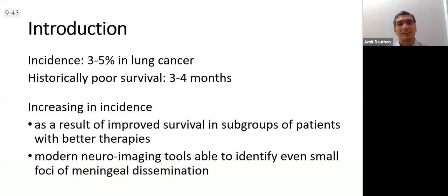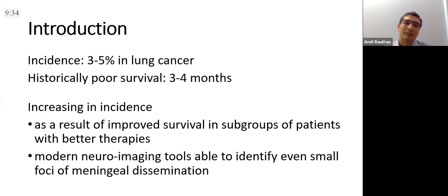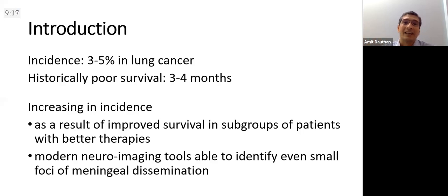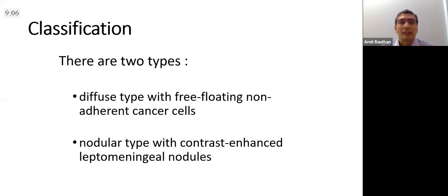This is the most dreaded complication of NSCLC in clinical practice. Luckily the incidence is very low — about 3 to 5 percent — but historically survival is very poor, only about 3 to 4 months. In recent years the incidence is going up because we are getting better and better treatments with better survival, but leptomeningeals remain as sanctuary sites. We also have better neuroimaging tools identifying even small meningeal dissemination.